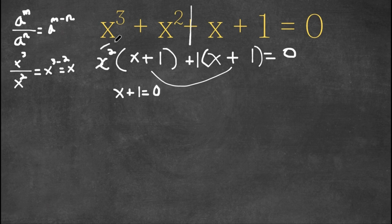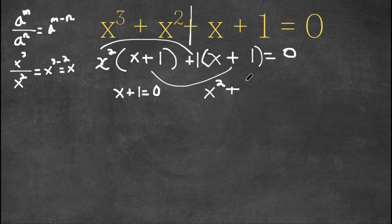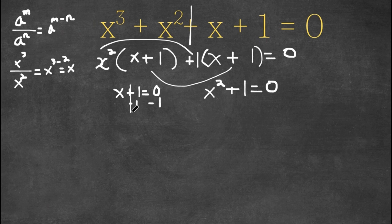And then we have x squared plus 1 — so that's another equation: x squared plus 1 equals 0. For x plus 1 equals 0, all we have to do is simply subtract 1 on both sides. This cancels out and we get x equals negative 1. So this is one of our solutions.